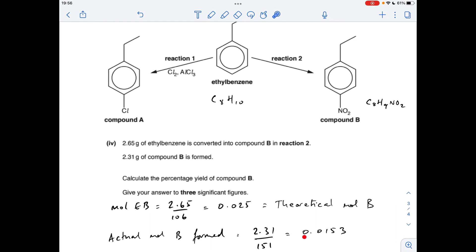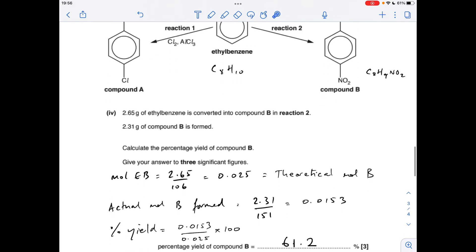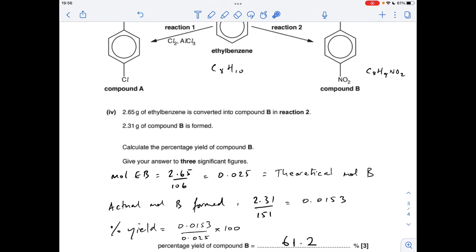And then I always do my percentage yield calculations from the moles rather than the masses. So the percentage yield is the actual moles divided by the theoretical moles times 100, and to three significant figures, 61.2 percent.